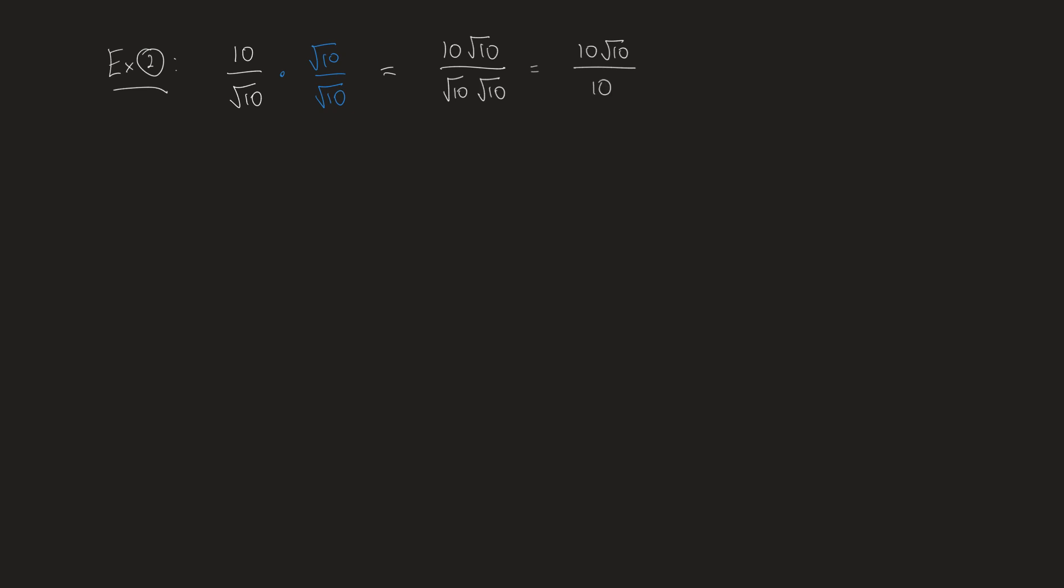And now I can cancel those common factors of 10. And what I get left with is the square root of 10. So sometimes when I rationalize a denominator, I actually clear the fraction entirely. And that's OK. That can definitely happen.